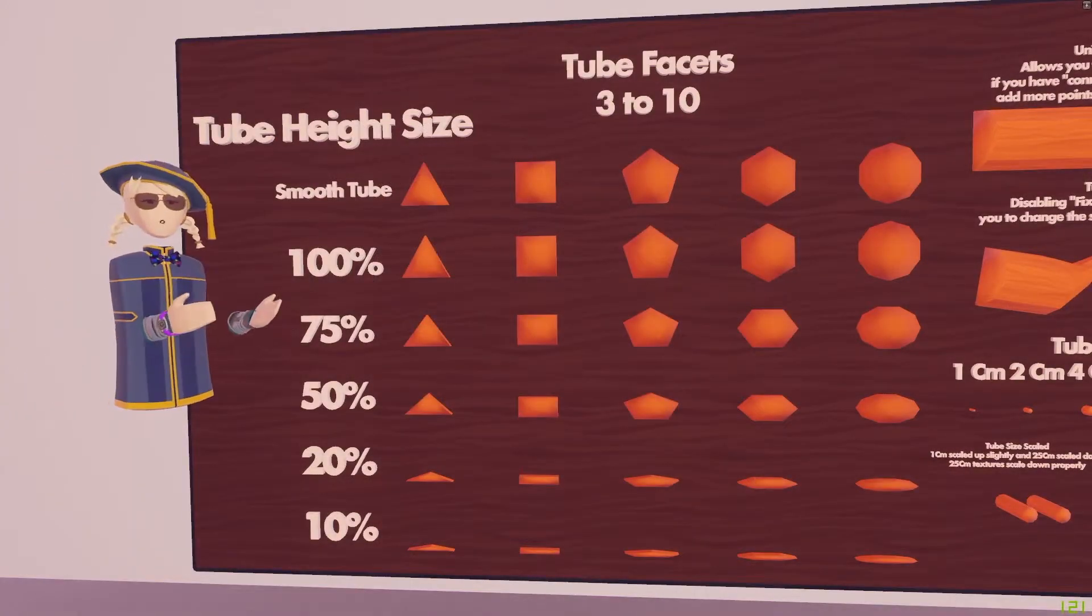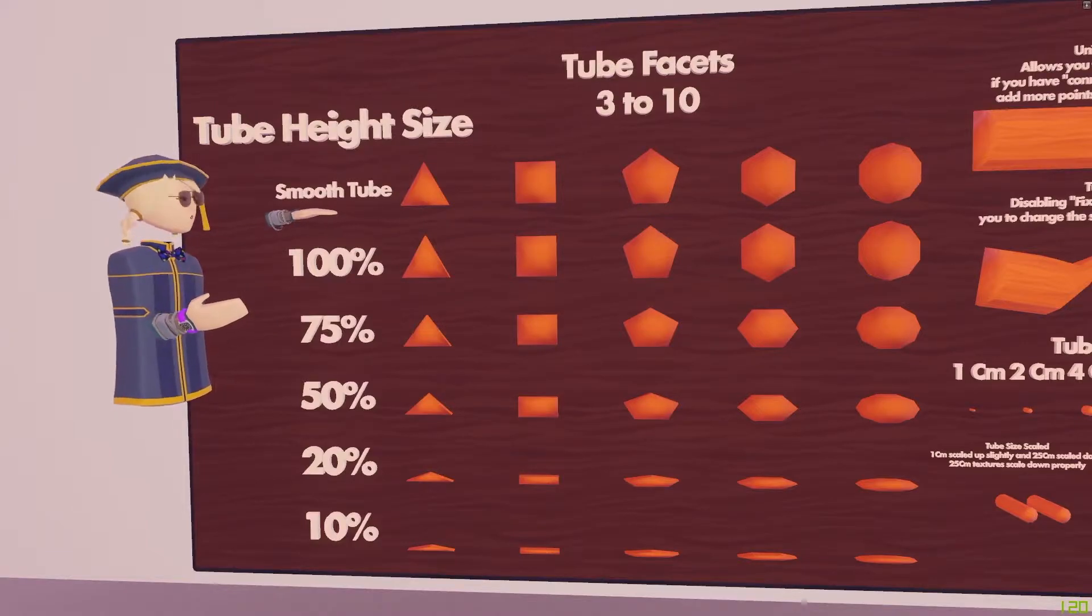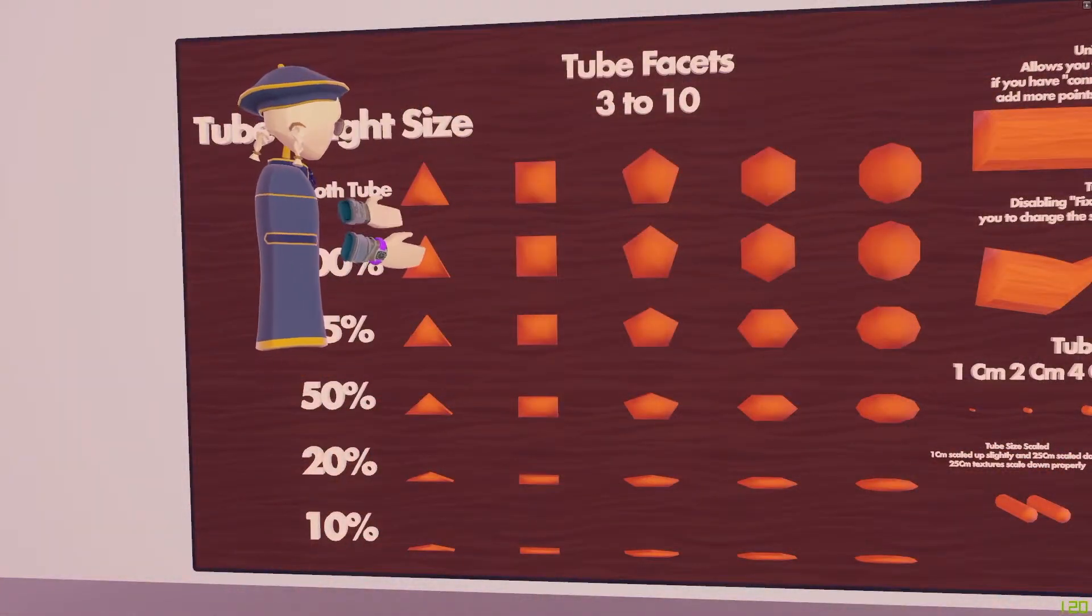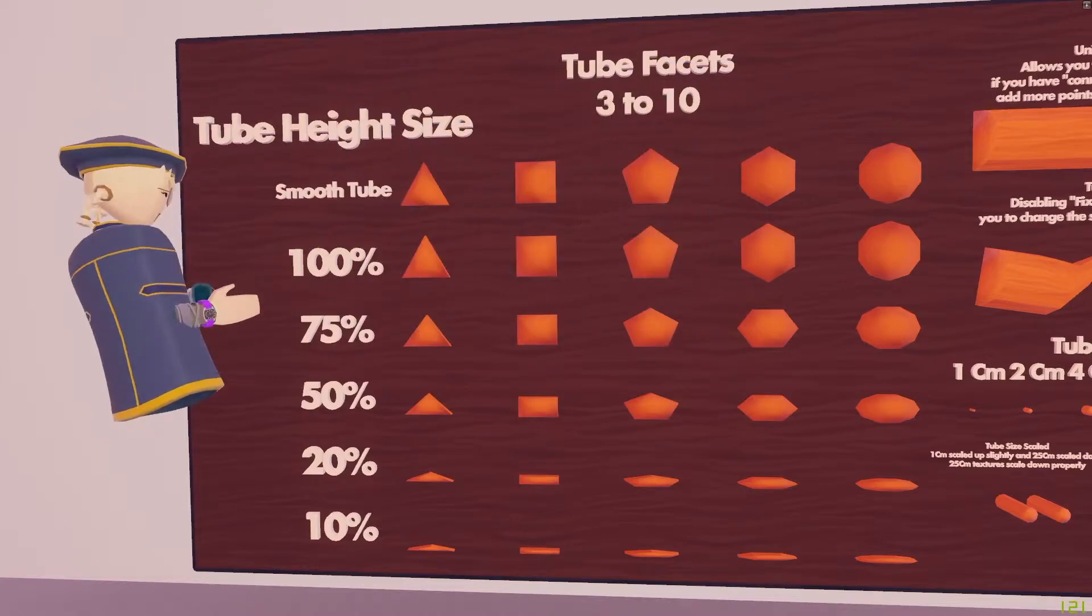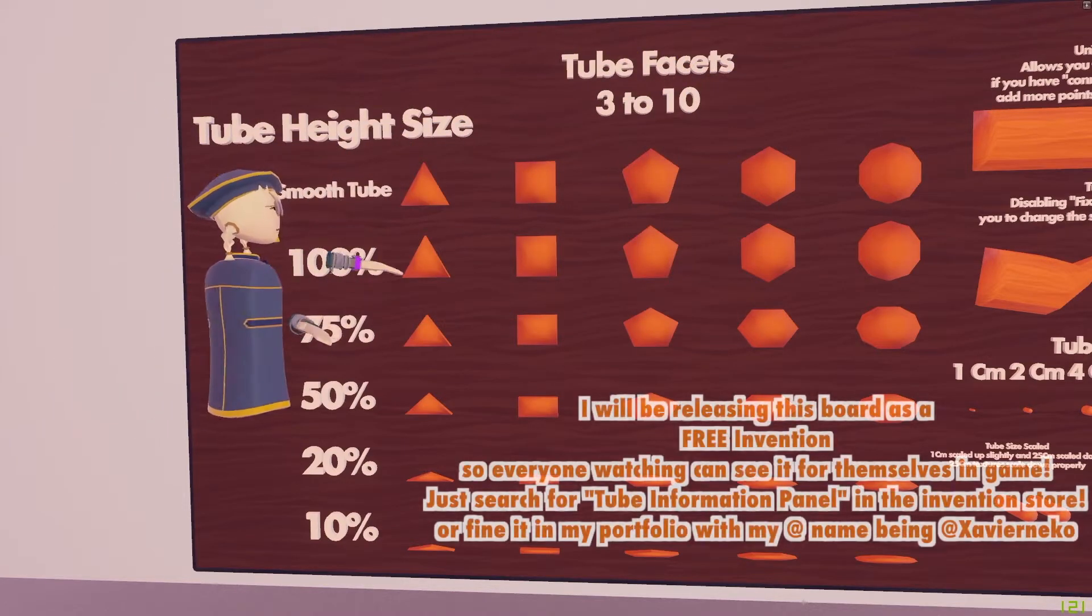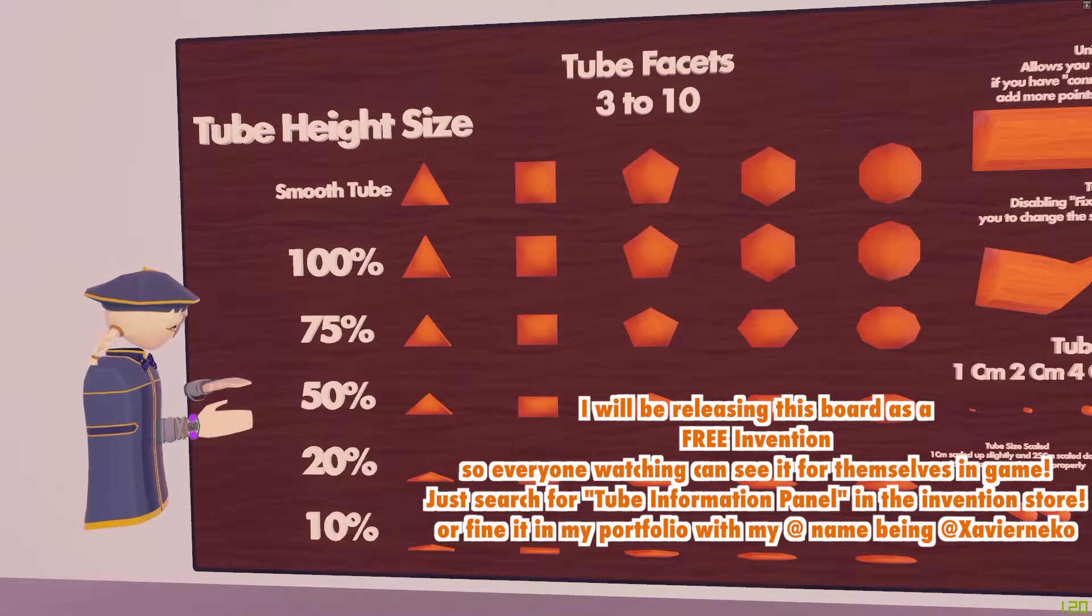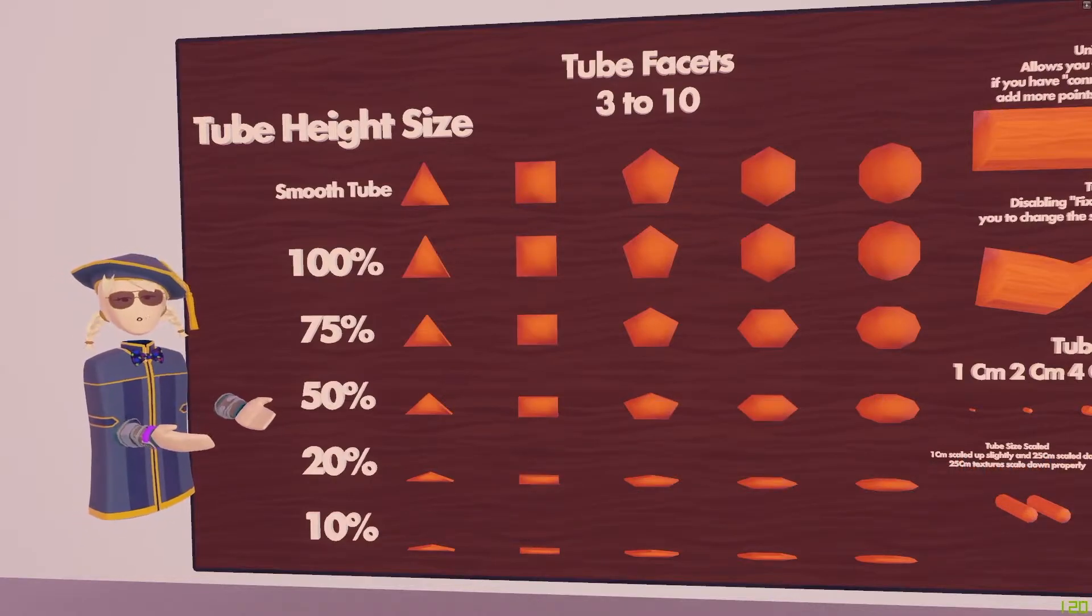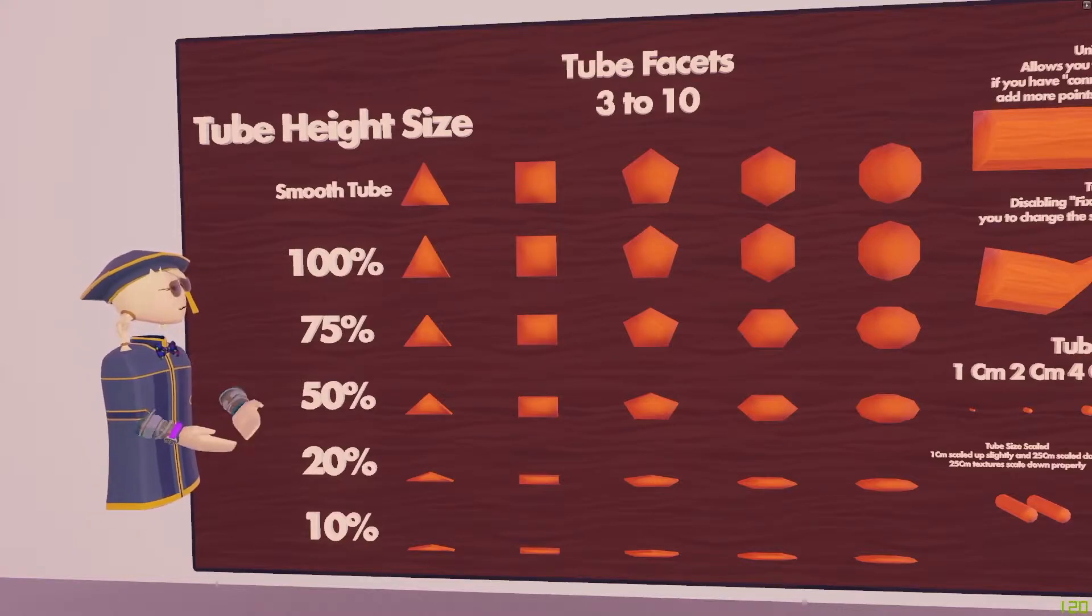Over here, we have all the tube facet sizes and tube height sizes, along with what it looks like with smooth tube. From left to right, we have three, four, five, six, and ten facets. Going down shows the different heights in descending order: 100, 75, 50, 20, and 10. Tube comes in all different shapes and sizes, and it's really important to utilize each different size and facet type to its maximum advantage.